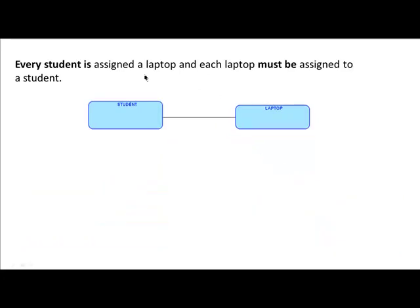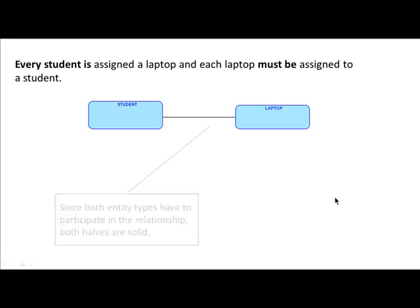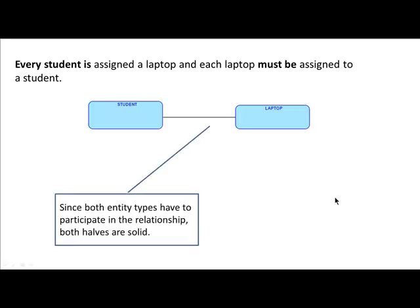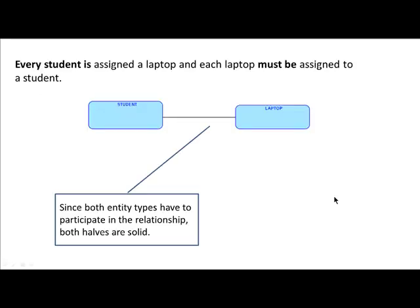In the third variation, every student is assigned a laptop and each laptop must be assigned to a student. Both entity types have to participate in the relationship. Therefore the whole line is solid — both halves are solid because both of them have to participate.